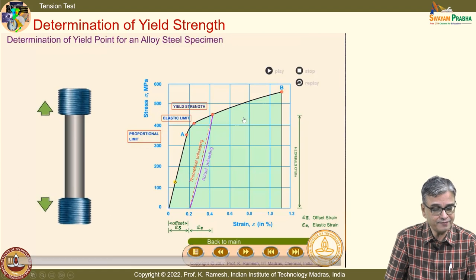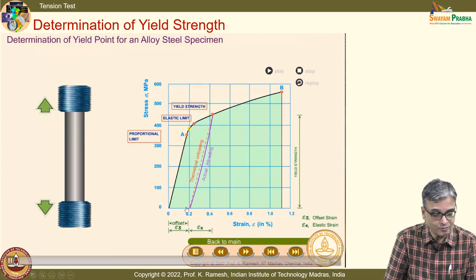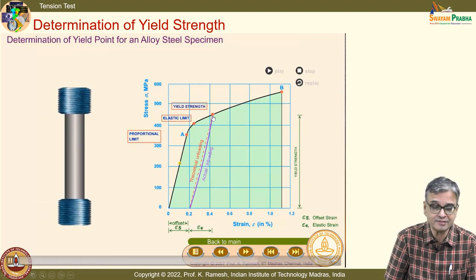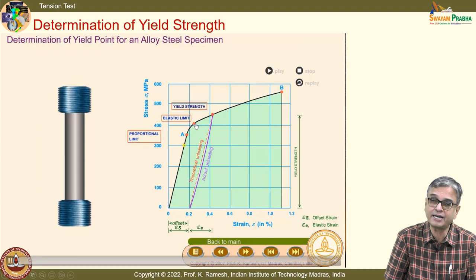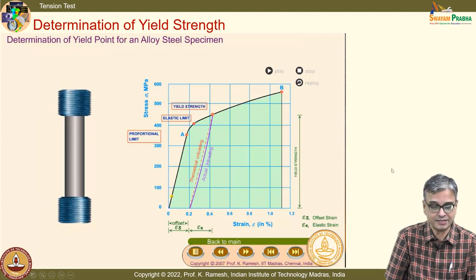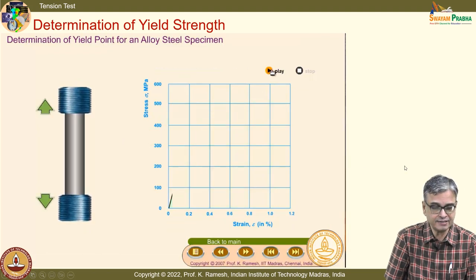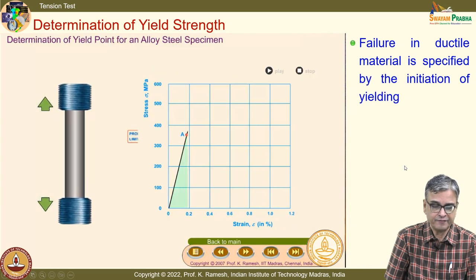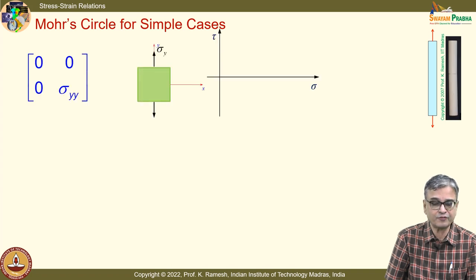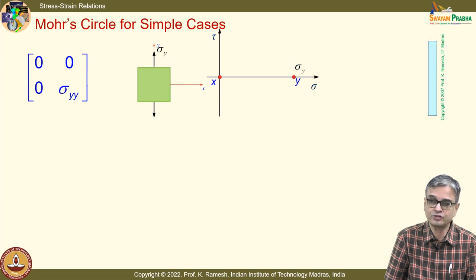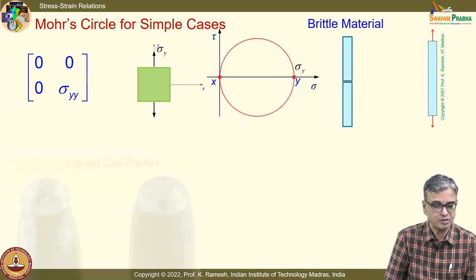When you unload, unloading happens only when you reach plasticity. You have elastic limit and proportional limit — all illustrated. In a ductile material, if it yields, we say it is yielding. For a brittle material failure happens differently. We have also said this is the maximum tensile stress theory; for ductile material failure happens at 45 degrees — recognizable from Mohr circle — which is why you have a cup-and-cone fracture.